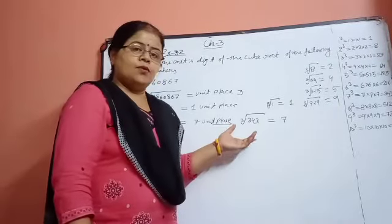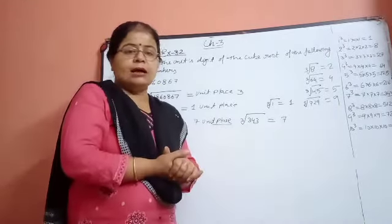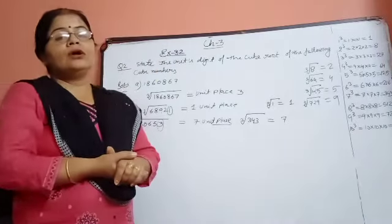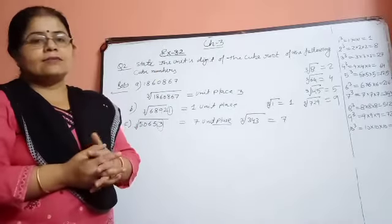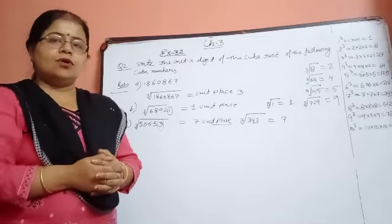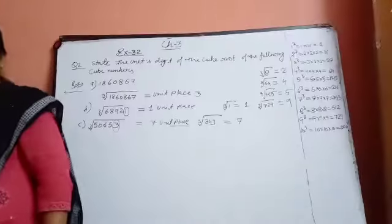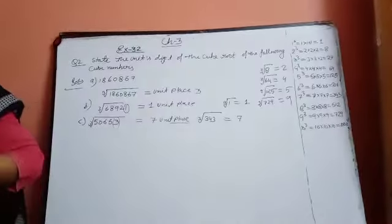2 into 2 into 2 into 7 into 7 into 7. Make them in a group of 3 factors. So here it will come 2, and from here it will come 7 — with a multiplication sign in between. So the cube root of 2744 is equal to 2 into 7, which is 14. This will be your answer.